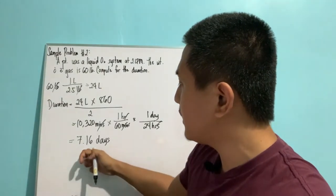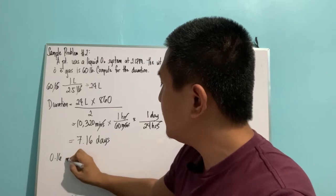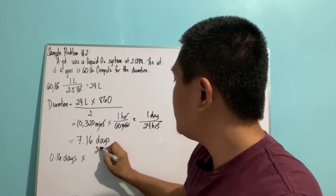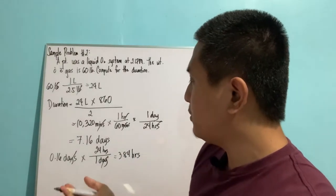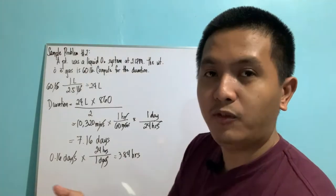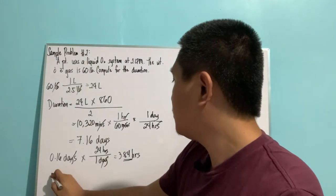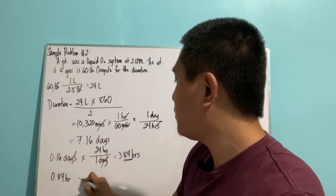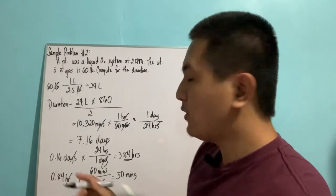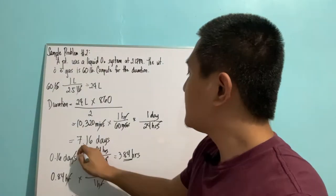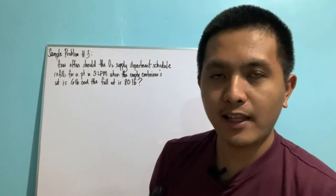There is no such thing as 0.16 days, so we convert: 0.16 days times 24 hours equals 3.84 hours. Your answer could be seven days and three hours. For a more complete answer, convert 0.84 hours into minutes: 0.84 times 60 equals 50 minutes. So the complete answer is seven days, three hours, and 50 minutes.